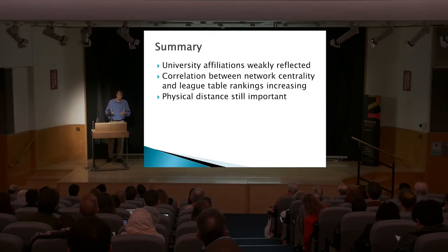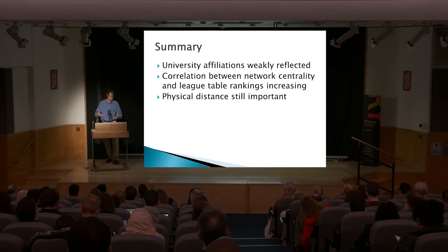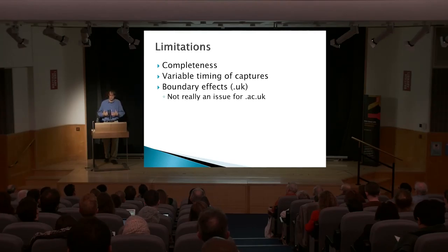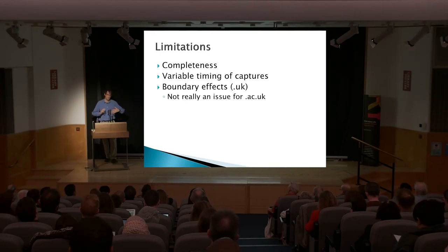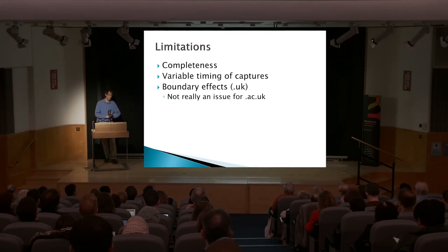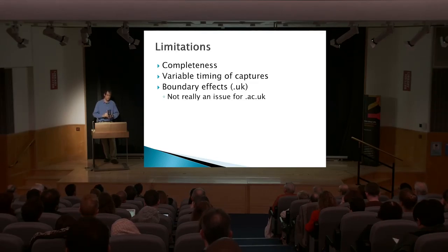So those were some of our first looks at universities as a place to start — seeing some affiliations and other measures reproduced, and noting that physical distance was still important. But there are a number of limitations that have been touched on throughout the day: one is completeness — just what is in this archive and what's missing; variable timings in how frequently some websites are crawled versus others; times of year, early or late; and for other instances, the effects of the boundary — at least within the JISC Internet Archive data, that boundary is in the .uk perspective.